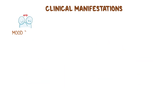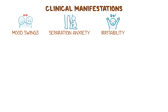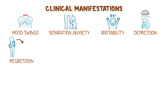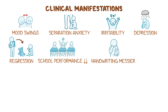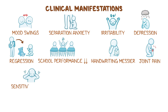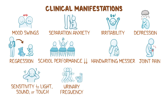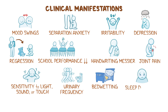Alongside these, many children experience mood swings, separation anxiety, irritability, depression, and even regression, where they might start behaving much younger than their actual age. As a result, school performance can drop unexpectedly, and handwriting may become messier. Some children can also develop joint pain, increased sensitivity to light, sound, or touch, urinary frequency, bedwetting, or other sleep disorders.